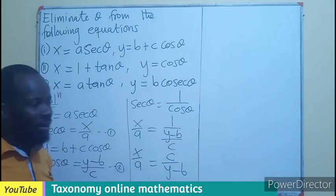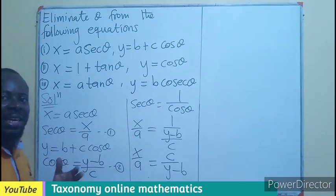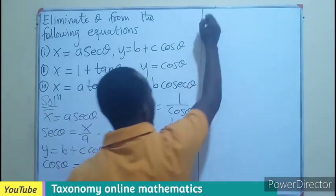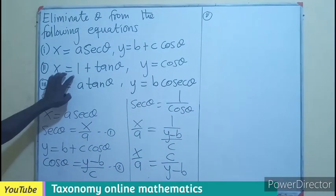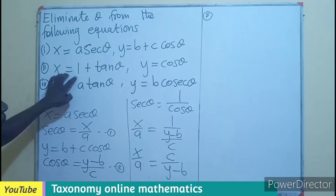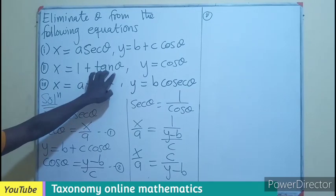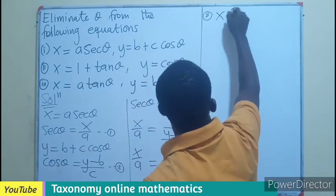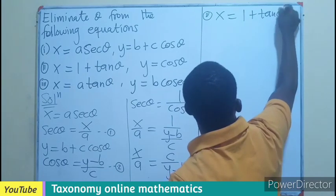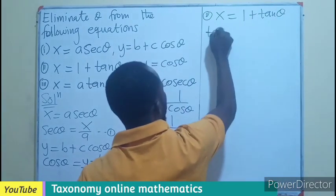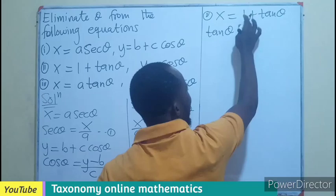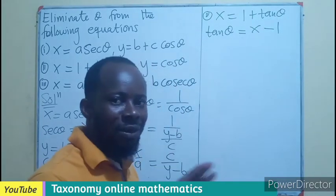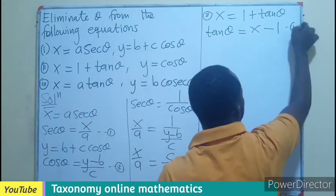We are only trying to eliminate the sec theta and the cos theta. All right, so in the second example, we can also try to do the same as in try to make tan theta the subject from here. So from X equals 1 plus tan theta, your tan theta is now going to be eliminating the 1 to become X minus 1, since tan theta has no coefficient. Let's just say this is our equation 1.